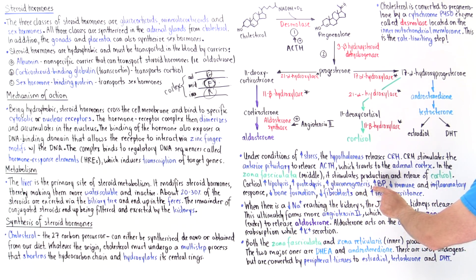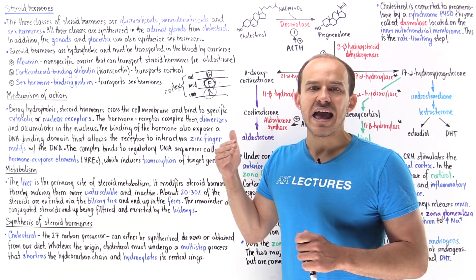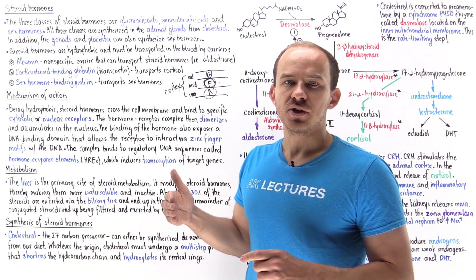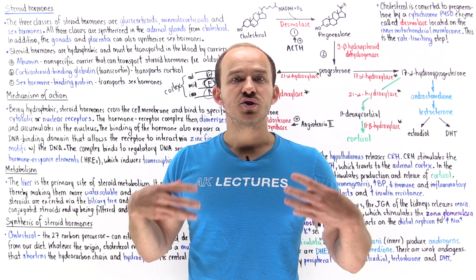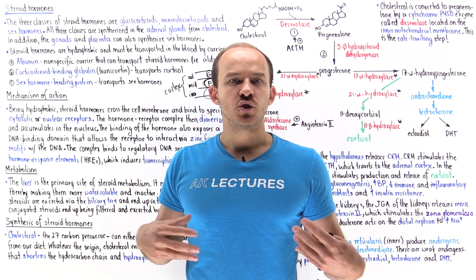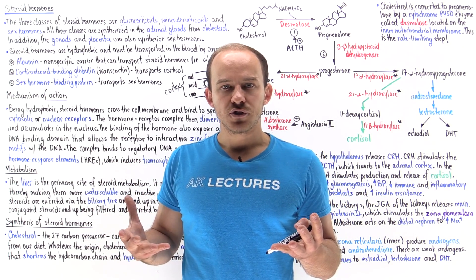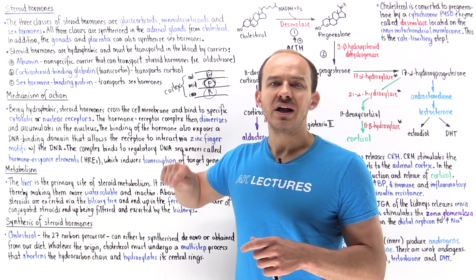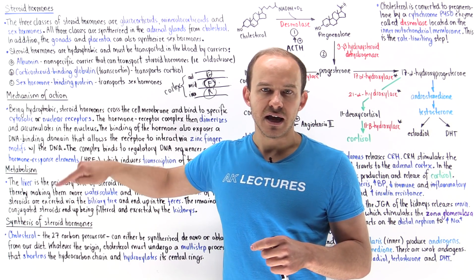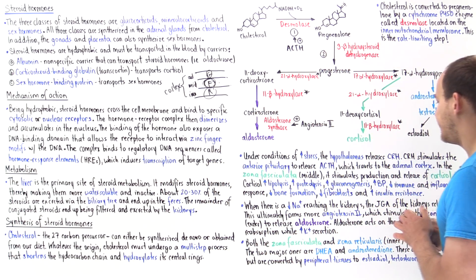Cortisol also increases blood pressure by increasing the expression of alpha-1 adrenergic receptors on arterioles, making them more sensitive to epinephrine and norepinephrine. In addition, cortisol can bind onto aldosterone receptors and increase the amount of water reabsorption by the kidneys.